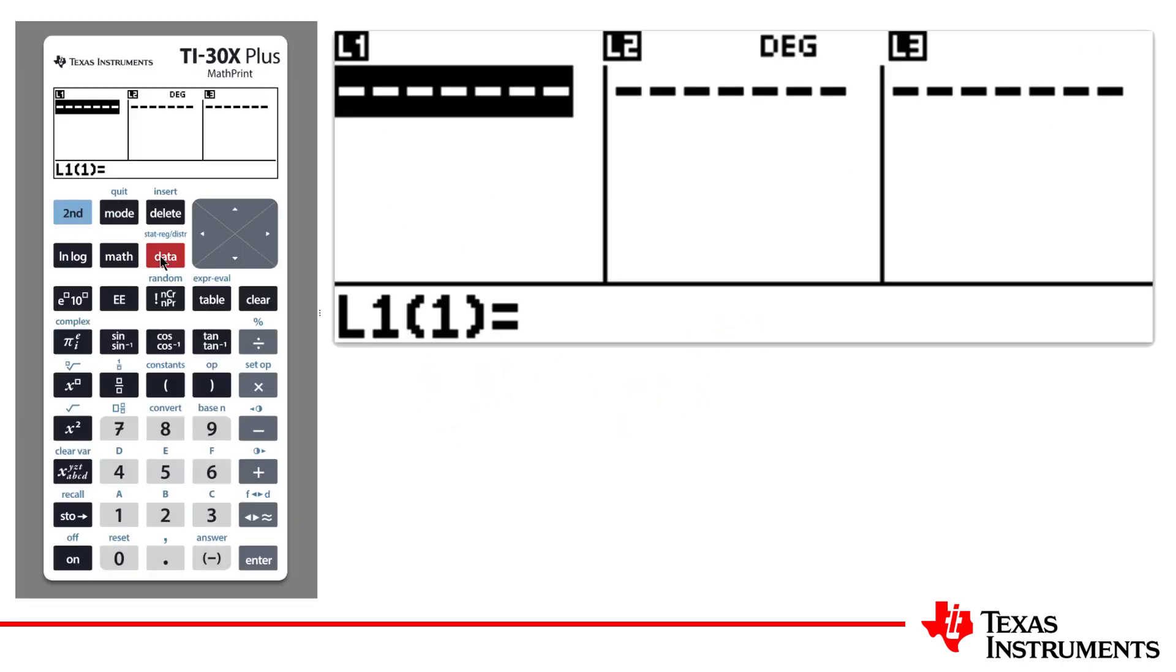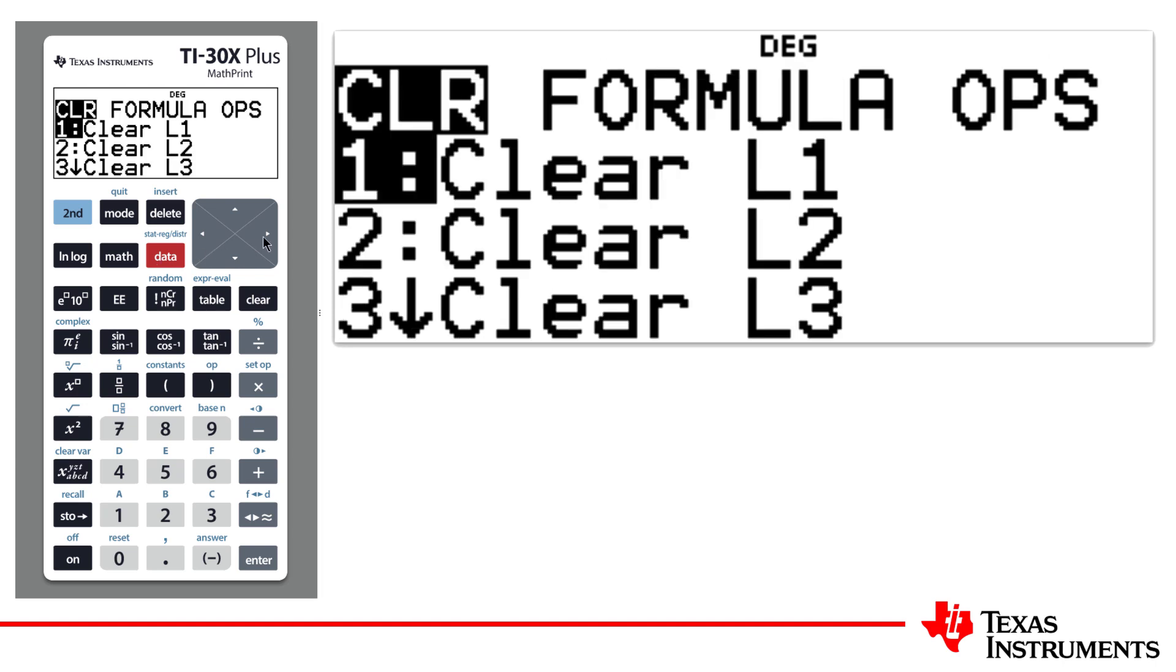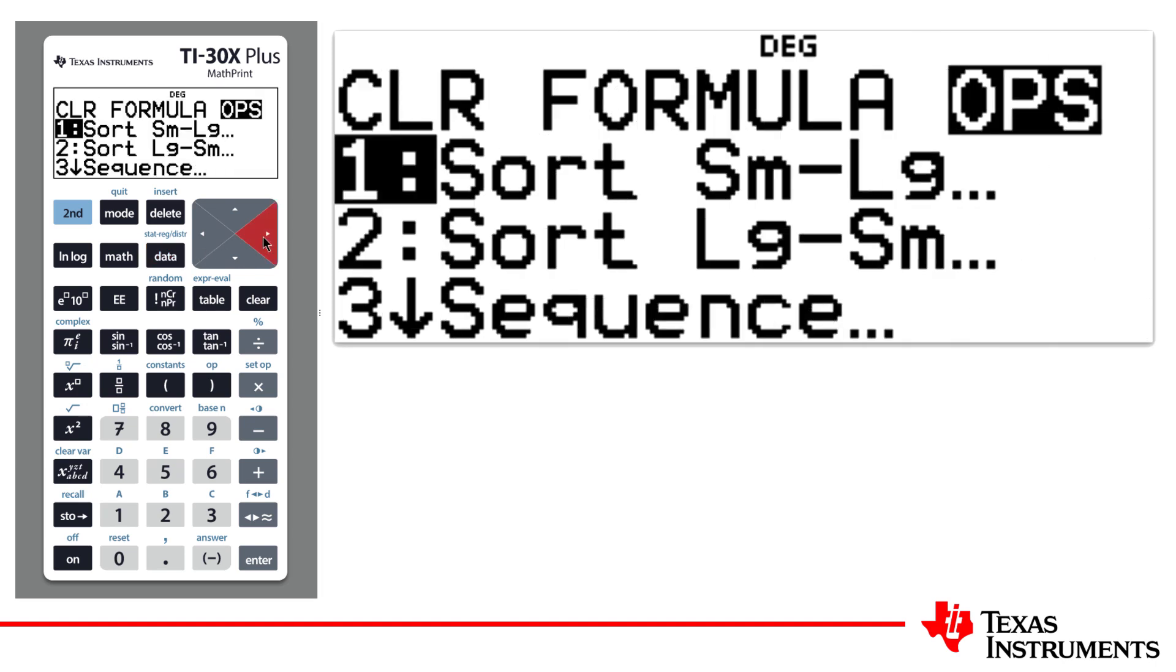I'll start with the lists. I need the numbers from 0 to 10 entered in list 1. I could type them in one by one, or an efficient way is to use the Sequence command. Navigate across to the Operations menu. Select option 3, Sequence.